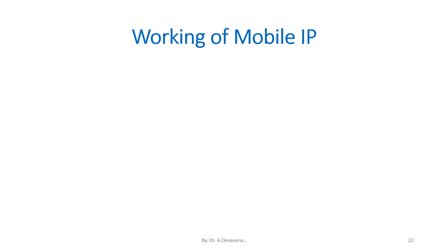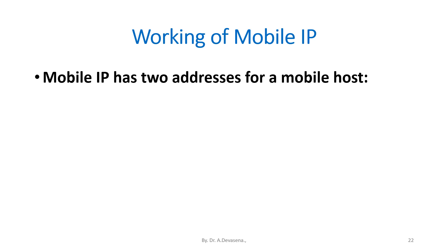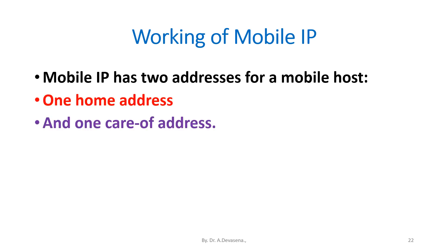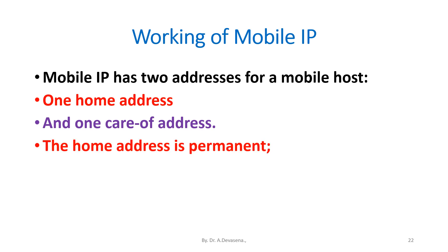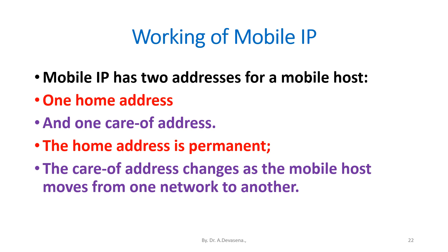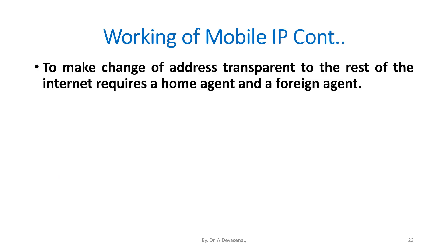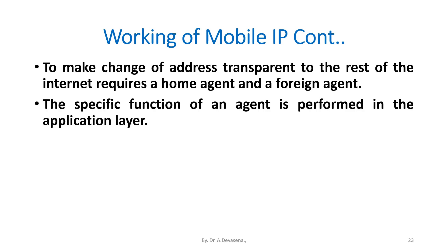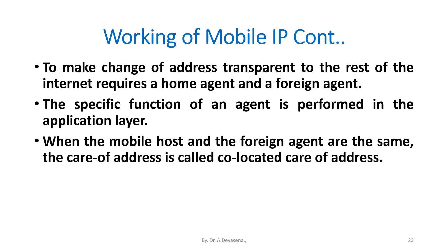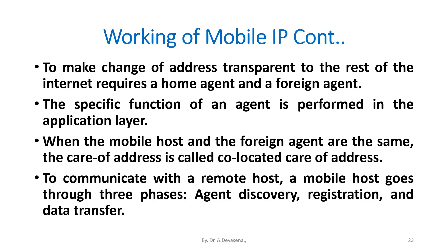Mobile IP has two addresses for a mobile host: one home address and one care of address. The home address is permanent; the care of address changes as the mobile host moves from one network to another. To make this change of address transparent to the rest of the internet requires a home agent and a foreign agent. When the mobile host and the foreign agent are the same, the care of address is called co-located care of address. To communicate with the remote host, a mobile host goes through three phases: agent discovery, registration, and data transfer.